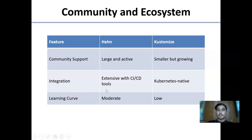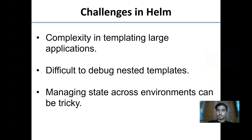Community and ecosystem: Helm has large and active community support; Kustomize has a smaller but growing community. Integration is extensive with CI/CD tools in Helm; Kustomize is Kubernetes-native. The learning curve is moderate for Helm and low for Kustomize.